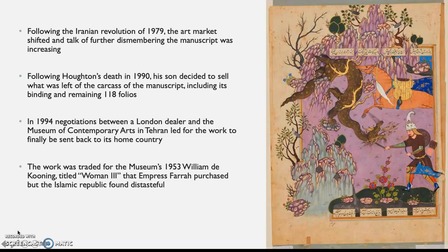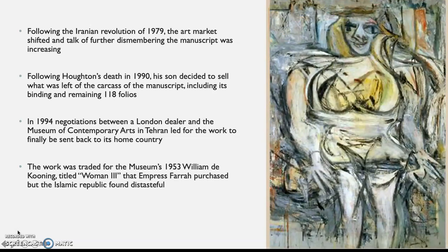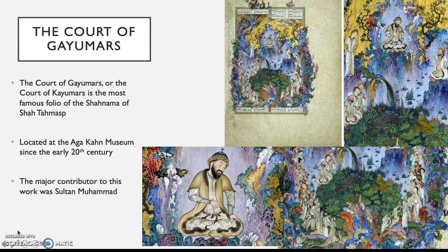Following Houghton's death in 1990, his son decided to sell what was left of the manuscript's sad carcass, including its remaining 118 pages and its binding. In 1994, negotiations between a London dealer and the Museum of Contemporary Arts in Tehran led to the rest of the manuscript finally being delivered back to its home country. The museum traded a 1953 Willem de Kooning painting titled 'Woman III' that Empress Farah had purchased — here's a picture of the de Kooning it was traded for. The trade-off commenced in the Vienna airport.